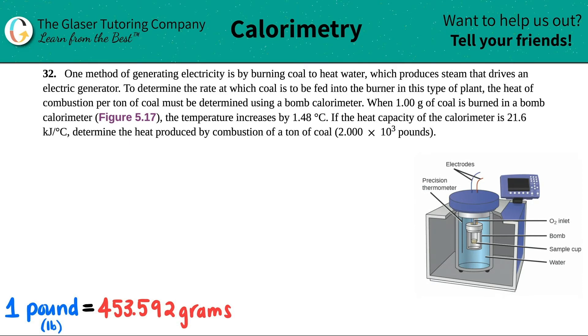Number 32. One method of generating electricity is by burning coal to heat water, which produces steam that drives an electric generator. To determine the rate at which coal is to be fed into the burner in this type of plant, the heat of combustion per ton of coal must be determined using a bomb calorimeter. When 1.00 grams of coal is burned into a bomb calorimeter, the temperature increases by 1.48 degrees Celsius. If the heat capacity of the calorimeter is 21.6 kilojoules per degree Celsius, determine the heat produced by combustion of a ton of coal, which is 2.000 times 10 to the third pounds.